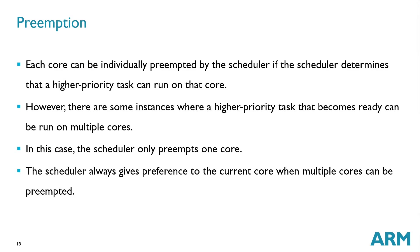Regarding preemption: each core can be individually preempted by the scheduler if a higher priority task can run on that core — similar to concepts studied before. However, there are instances where a higher priority task that becomes ready can be run on multiple cores. In that case, the scheduler only preempts one core. The scheduler always gives preference to the current core when multiple cores can be preempted.